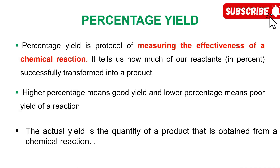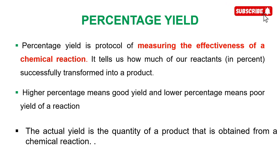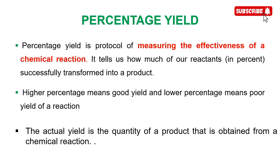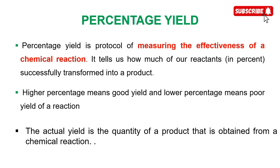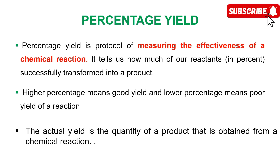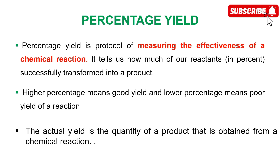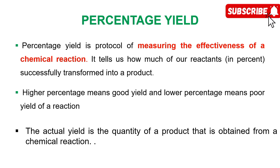Percentage yield is a metric we use to measure the effectiveness of a chemical reaction, telling us how much of our reactant is being converted successfully into products. The higher the percentage yield, the more successful a reaction is. The actual yield is also needed — this is the quantity of product you actually obtain when performing the reaction in the lab.